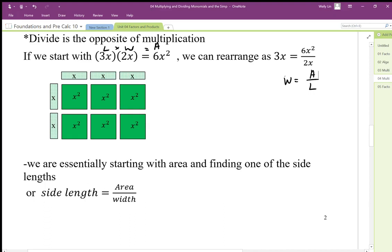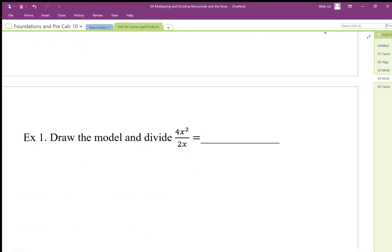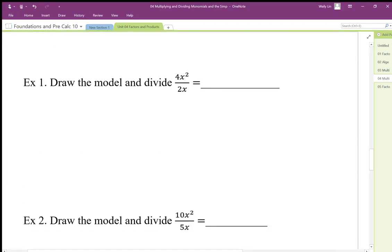If I were to show a model for 4x² divided by 2x, I need to start with areas of 4x². So I have 1x², 2x², and I need to do it such that one of the edge lengths will be 2.